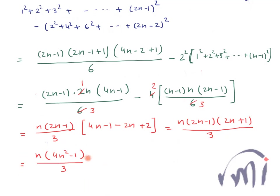So the formula to find the sum of squares of the first n odd numbers is n(4n²−1)/3. In the next video we are going to derive the formula to find the sum of the first n triangular numbers. Keep watching MathSmart — bye-bye till then!